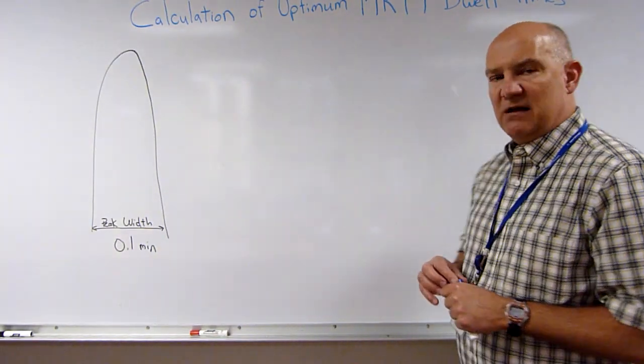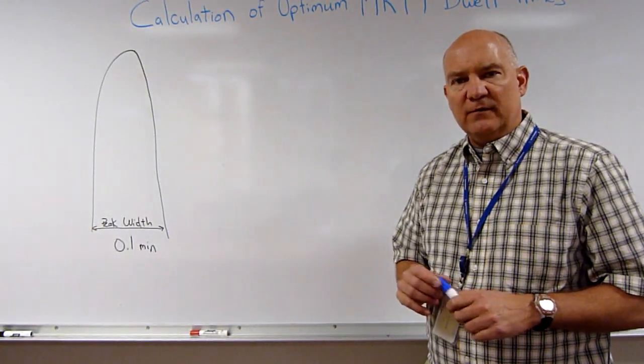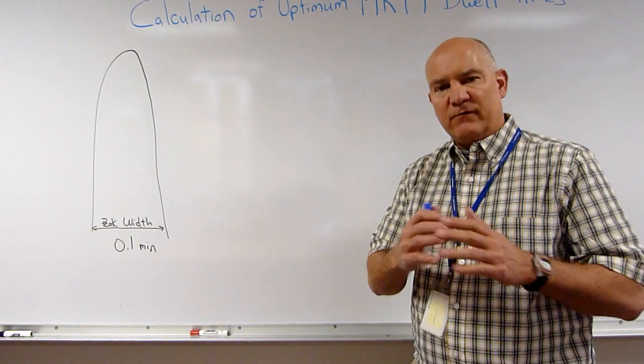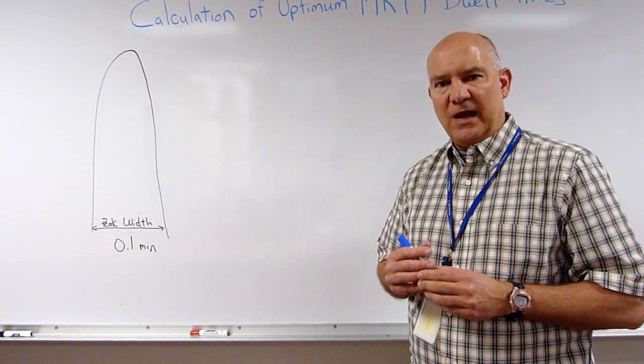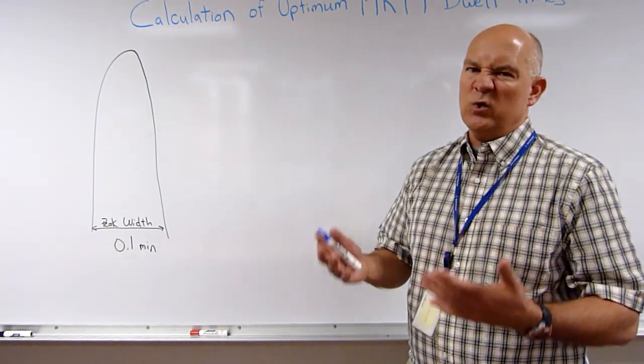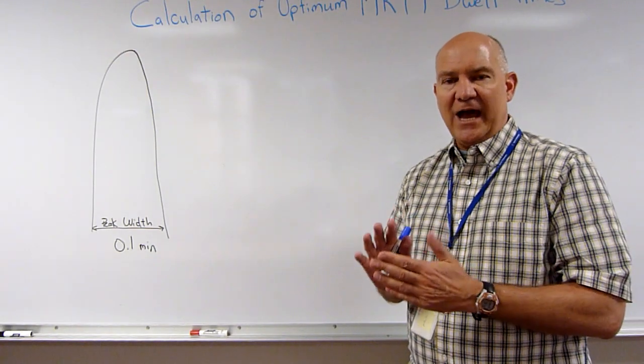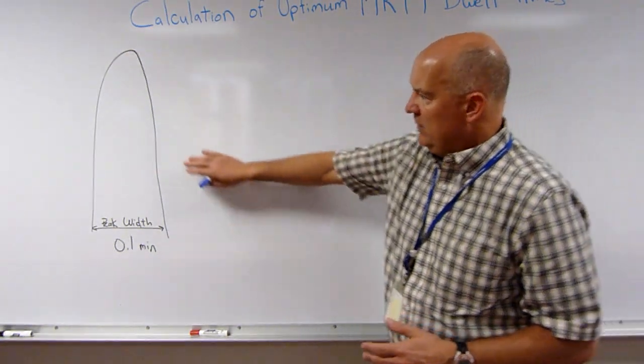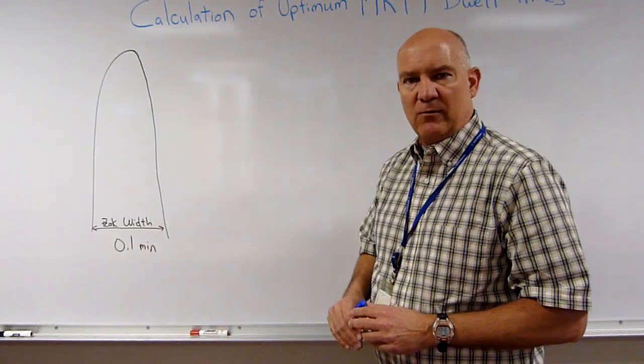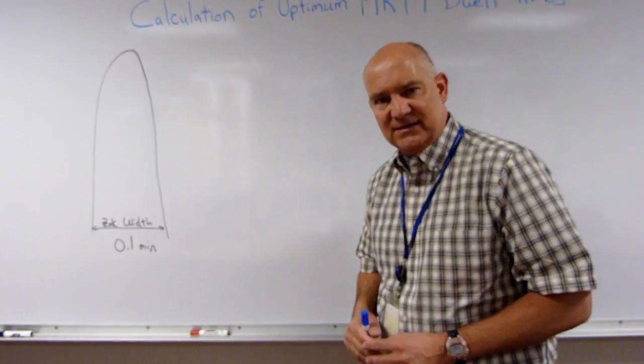In order to calculate this, what we need to do is start with a representative chromatographic peak from our overall chromatogram. The best peak to choose is often the most narrow peak. This is our worst case situation, the least amount of time that we have compared to all the other chromatographic peaks.